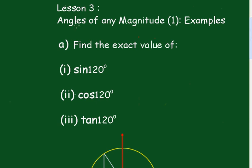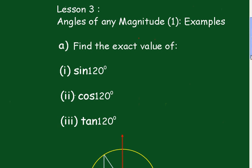Alright, lesson three, angles of any magnitude part one examples. We have to find the exact value of the sine of 120, the cosine of 120, and the tangent of 120.